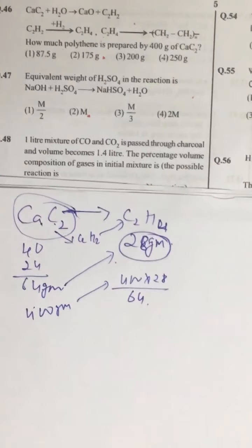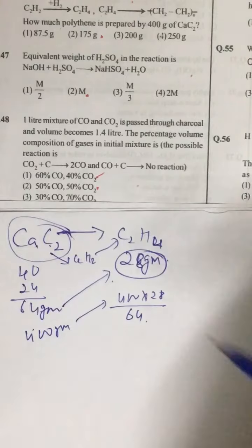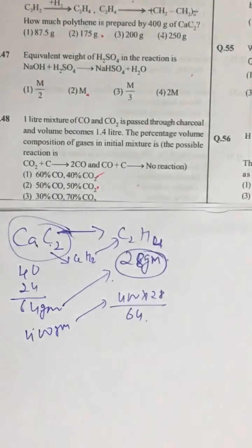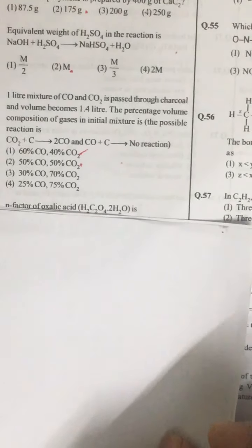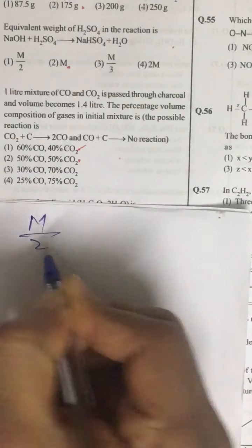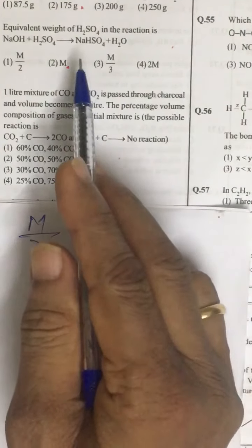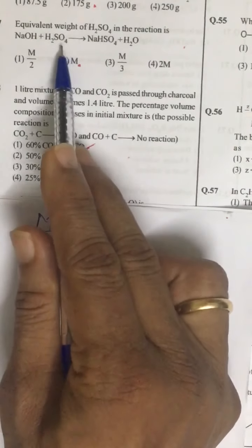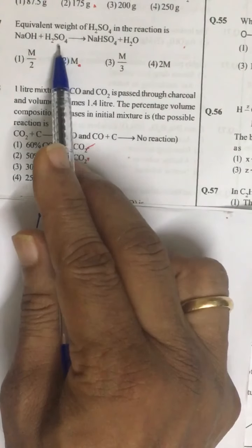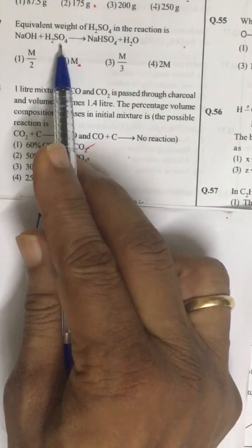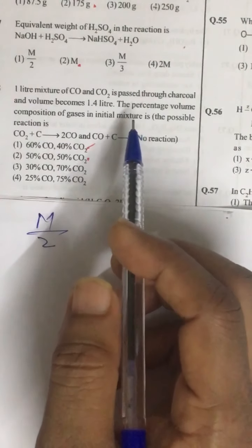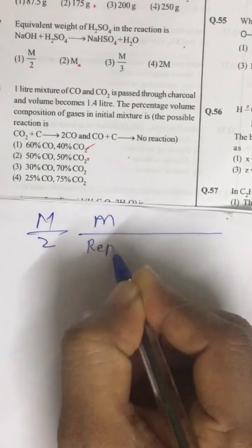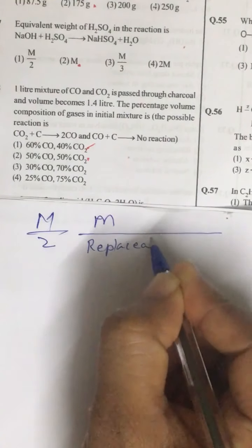And look at the second question. Equivalent mass of H2SO4. In this particular reaction, see normally if the question is what is the equivalent mass of H2SO4, we will say it is a molar mass divided by 2. But in this reaction, if you concentrate, only one H positive of hydrogen is getting transferred. And what is the equivalent mass of an acid? It is given by molar mass divided by replaceable. We simply say replaceable H positive.